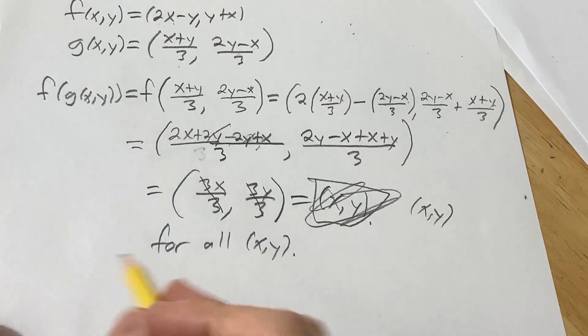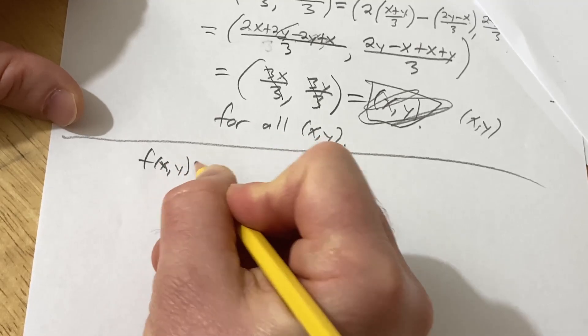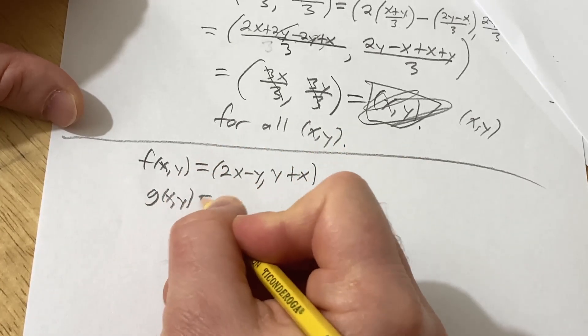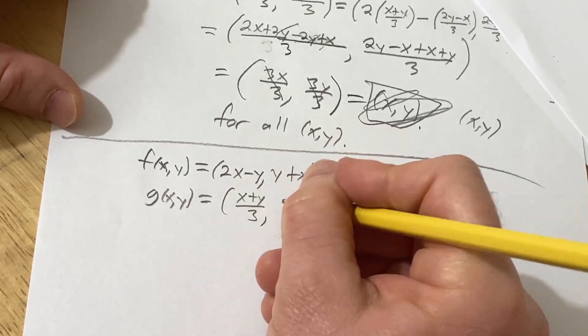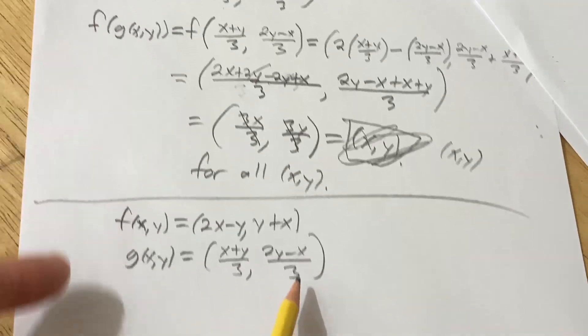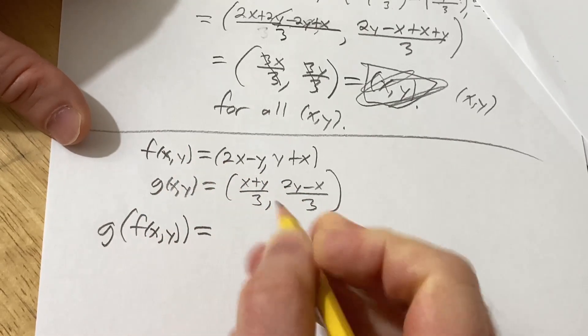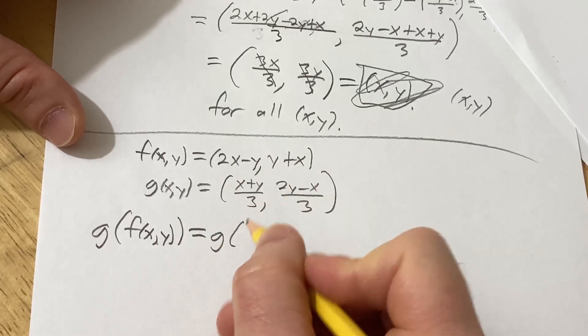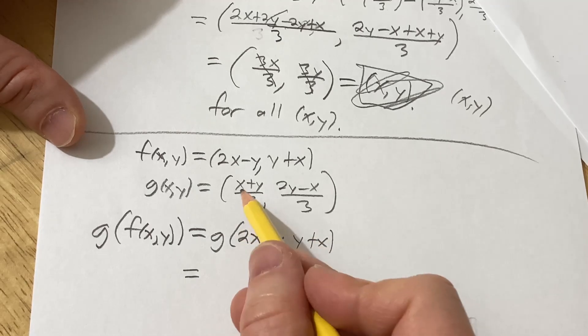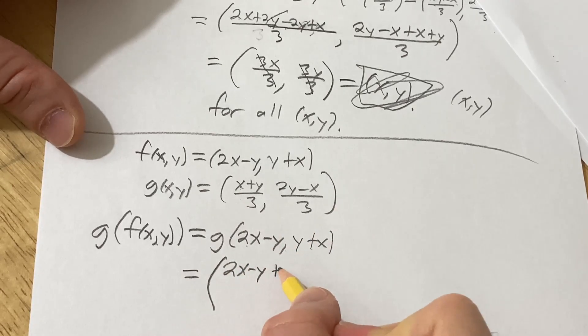So now we've got to check the other direction, so let's do it. So because it's hard to see on the screen, I'm going to write it again, both functions here. We have f of (x,y) equals (2x - y, y + x). And g of (x,y) equals ((x + y)/3, (2y - x)/3). Okay, so now we're going to check the other direction. So now we have to look at, we already did f of g of (x,y). So now we have to do g of f of (x,y). So now we replace f with what it is. So this is g of (2x - y, y + x). And now we're looking at g. So this is our x, this is our y. So it'll be x, which is all of this, plus y, which is all of this. See, it's x plus y, it's all of that, over 3. And then 2 times y, which is this, minus x, which is this, all over 3.